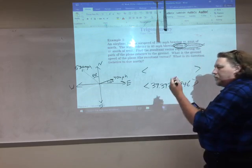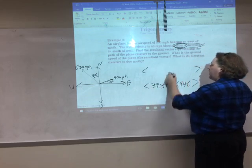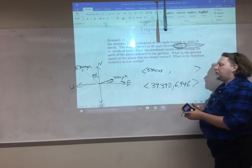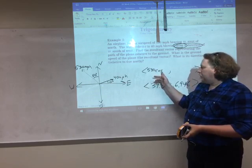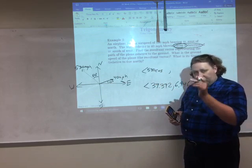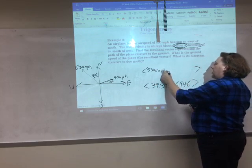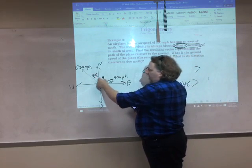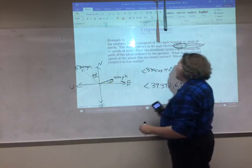So, again, magnitude times the cosine of the angle gives me x. So 530 miles per hour times the cosine of what angle am I going to put there? That's right, 140 degrees. Because it's 90 degrees from here to here. And another 50 degrees, that's 140.